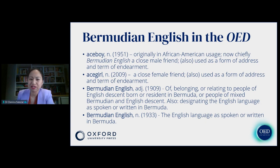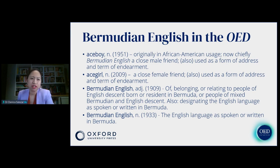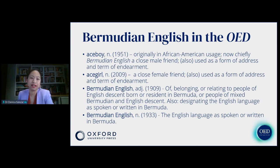We have words like ace boy and ace girl, referring to close male or female friends. Ace boy is an older word originally used in African American usage but now more widely used in Bermudian English. Ace girl, its female counterpart, is much younger — we were only able to date it to 2009. We also had to add entries for the term Bermudian English itself.